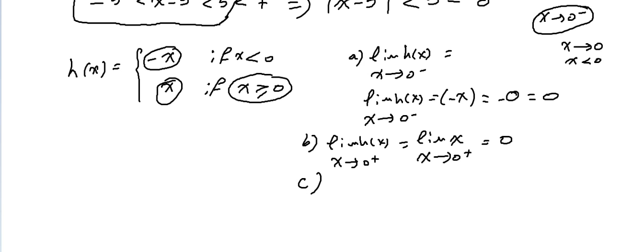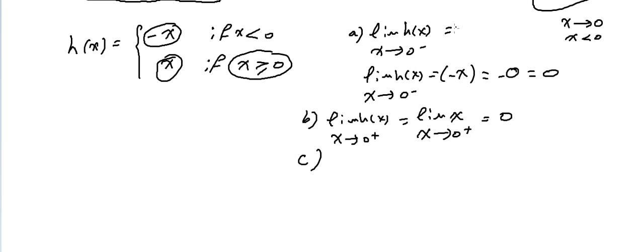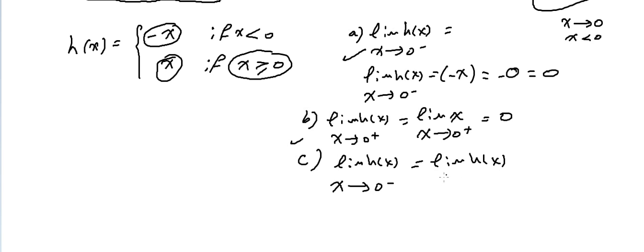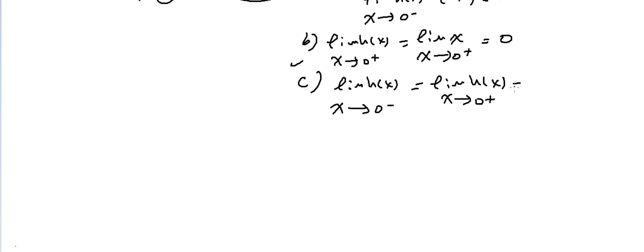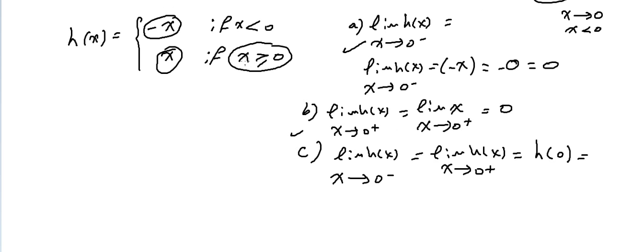Does the limit of H(X) as X approaches zero exist? Since the limit of H(X) as X approaches zero minus equals the limit as X approaches zero plus, yes, the limit exists. Its value is zero. We also verify that H(0) equals zero by substituting X = 0 into H(X) = X, confirming H(0) = 0.